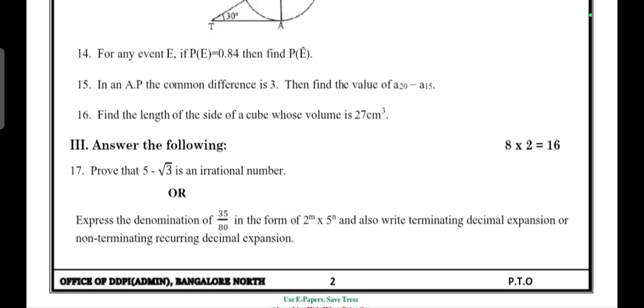Prove that 5 - √3 is an irrational number, OR express the denominator of 35/18 in the form of 2^m × 5^n and also write whether it's terminating decimal expansion or non-terminating recurring decimal expansion.